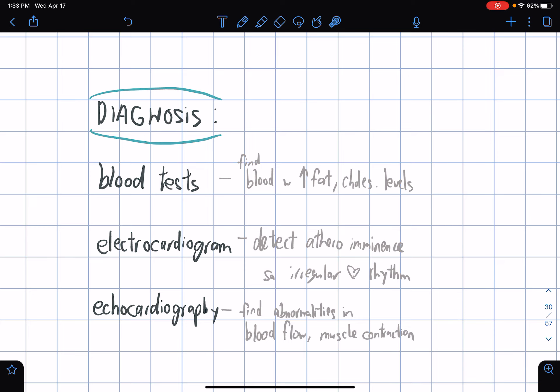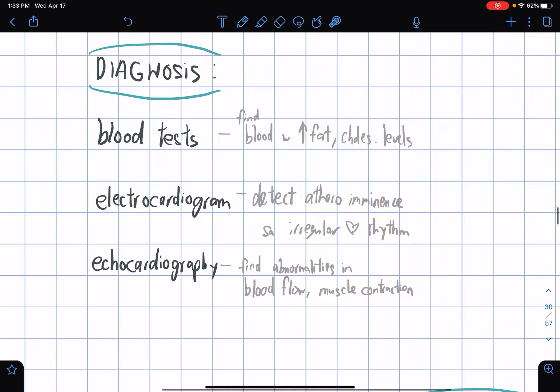What is the diagnosis? We have to undergo blood tests. In this diagnostic solution, you basically find blood with high fat and cholesterol levels. If your blood is found to be high in these, then you have a good chance of having atherosclerosis. Another way of diagnosing is through an electrocardiogram - you detect abnormalities in irregular heart rhythm. We have echocardiography - you find abnormalities in blood flow and muscle contraction.